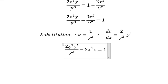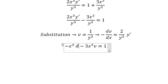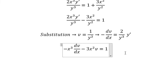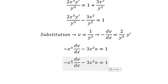This one, we will change for negative dv over dx. We will divide both sides with x to the power of 3 with the negative.